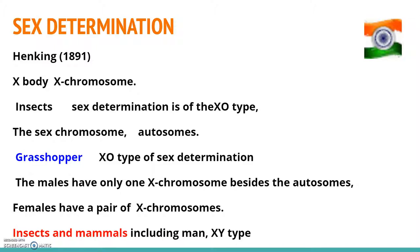Henking, a scientist, in 1891 could trace a specific nuclear structure during spermatogenesis in a few insects. He observed that 50 percent of the gametes — specifically the sperm — did not receive this structure. Henking gave the name X body to this structure, but he could not explain its significance.